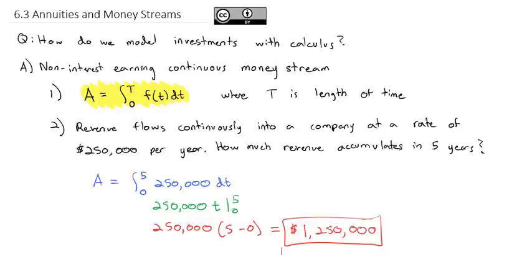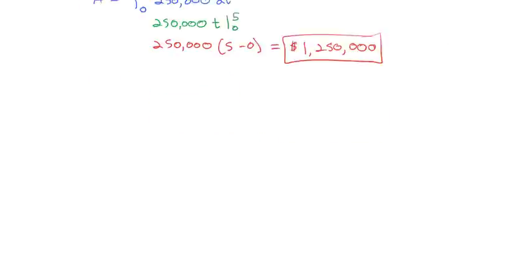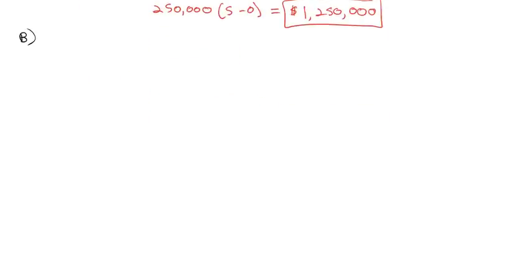Now, this isn't a very exciting example because we aren't earning any interest, and the equation becomes quite predictable. So let's start talking about interest. We're going to eventually come back to this continuous money stream earning interest, but first we have to do a little bit of foundational work along the way.